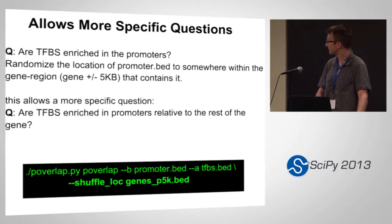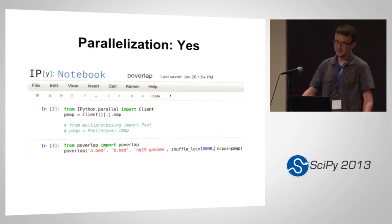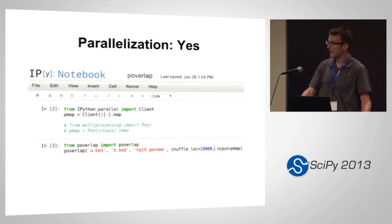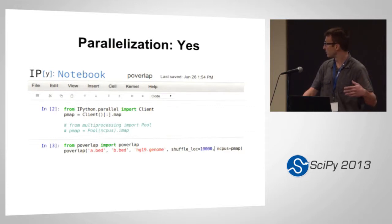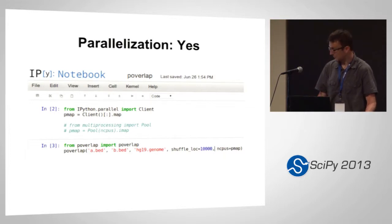It automatically parallelizes using multiprocessing, trying to create as few temp files as possible. You can send it an NCPUs parameter, and if you call it from Python you can send NCPUs a callable. The default would be something like a multiprocessing pool where you send it the map function of that pool. But you can also send it the map function of an IPython client, which gives you a different means to parallelize.